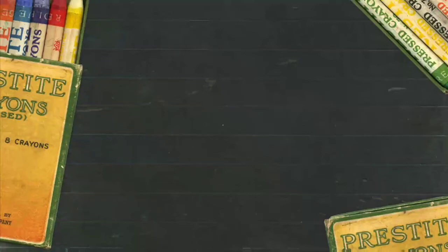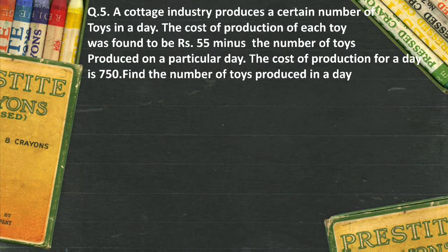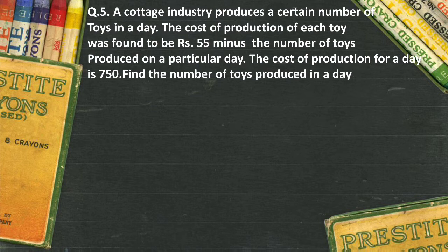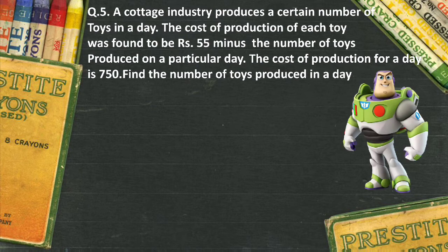Hey there, Joel here, and welcome to my channel Math World. Today we're going to solve another problem based on quadratic equations. The problem is: a cottage industry produces a certain number of toys in a day. The cost of production of each toy was found to be 55 minus the number of toys produced on a particular day. The cost of production for a day is rupees 750. Find the number of toys produced in a day.